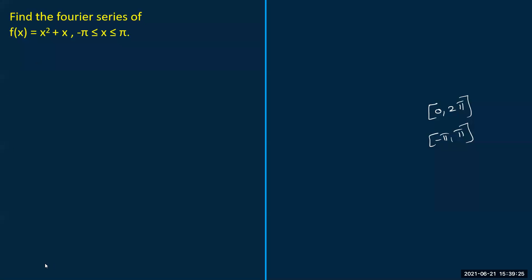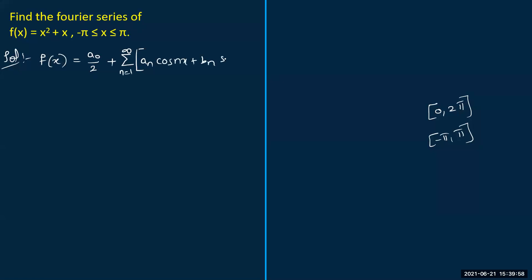I am writing everything clearly for your comfort. When you are given a certain function — in this case x² + x, but this idea works for any other function also — the Fourier series expansion of f(x) can be written as: a₀/2 plus summation from n = 1 to infinity of aₙcos(nx) + bₙsin(nx).